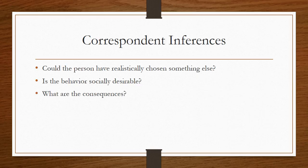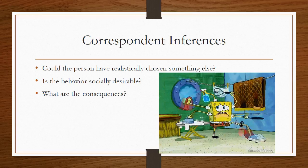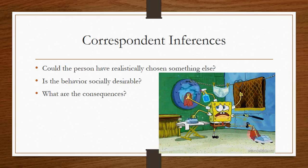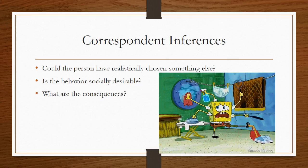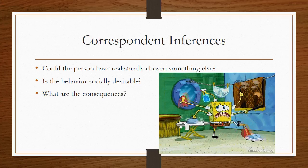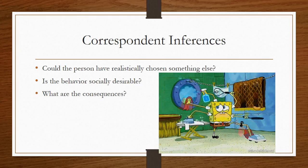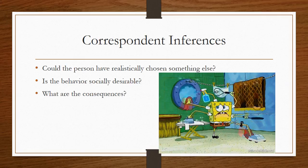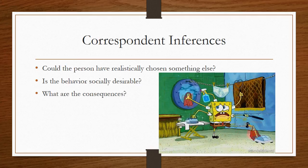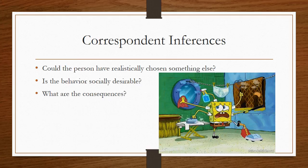The last thing we can ask is: what are the consequences? Does this person gain something good or bad from this? Here's Spongebob Squarepants who looks pretty unhappy doing all these chores. He's not getting any pleasure from this, so there must be something outside of him causing him to do the chores. We'd make an external attribution — it's not something he's doing because he wants to, but because he feels he has to.